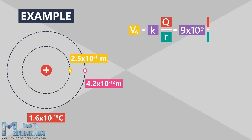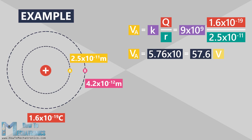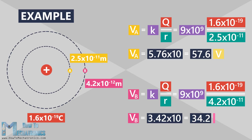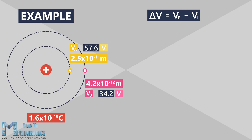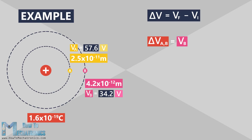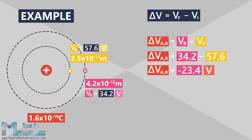In order to find the electric potential difference, we need to find the potential at point A and the potential at point B. The potential at point A, which is the first energy level, is going to be 57.6 volts. The potential at point B, which is at greater distance, is going to be 34.2 volts. First we are going to calculate the potential difference as we move from A to B. In this case A is our initial potential and B is our final potential, so the potential difference is going to be 34.2 minus 57.6, which is equal to minus 23.4 volts.